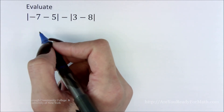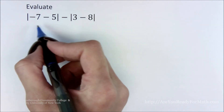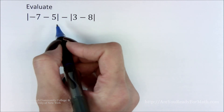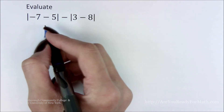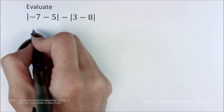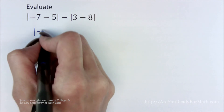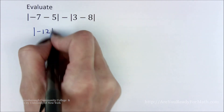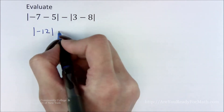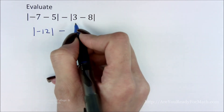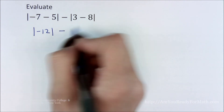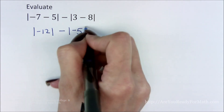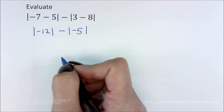To simplify this expression, we will need to work inside of the absolute value bars first. In the first set, negative 7 and negative 5 gives us negative 12 inside of the absolute value bars. In the second set, positive 3 and negative 8 gives us negative 5 inside of the absolute value bars.